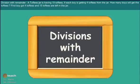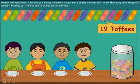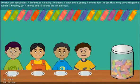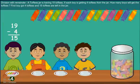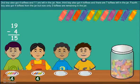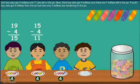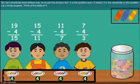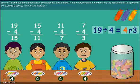Division with remainder. A toffee jar has 19 toffees. If each boy gets 4 toffees, how many boys will get toffees? The first boy got 4 toffees and 15 were left. The second boy got 4 and 11 were left. The third child got 4 and 7 were left. The fourth child got 4, but only 3 toffees remained — we can't distribute more. So 4 is the quotient and R3 means 3 is the remainder.